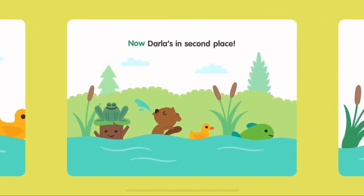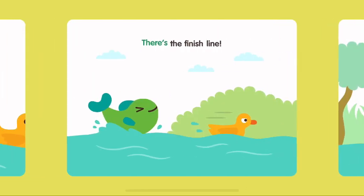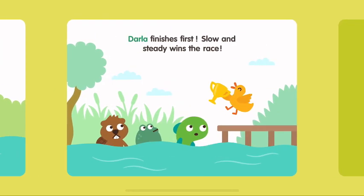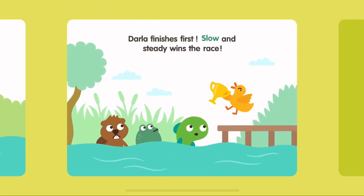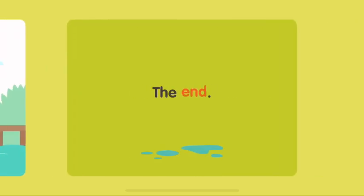Now Darla's in second place. Fins takes the lead, but decides he has time to do some fancy belly flops. There's the finish line. Darla finishes first. Slow and steady wins the race. The end.